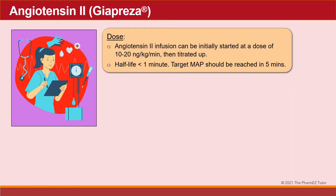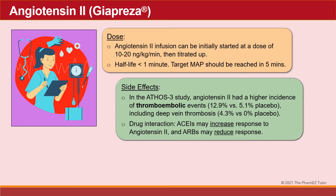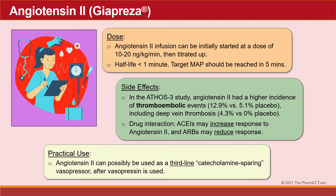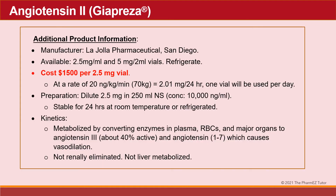For dosing, angiotensin II infusion is initially started at 10 to 20 nanograms per kilogram per minute, then titrated up. The half-life is less than one minute, and target MAP should be reached in five minutes. Regarding side effects, in the ATHOS-3 study, angiotensin II had a higher incidence of thromboembolic events — 13% versus 5% placebo — including deep vein thrombosis. ACE inhibitors may increase the response to angiotensin II, while ARBs may reduce it. Overall, angiotensin II can be used as a third-line catecholamine-sparing vasopressor after vasopressin. The cost of Giapreza is $1,500 per vial, with approximately one vial used per day at 20 nanograms per kilogram per minute.